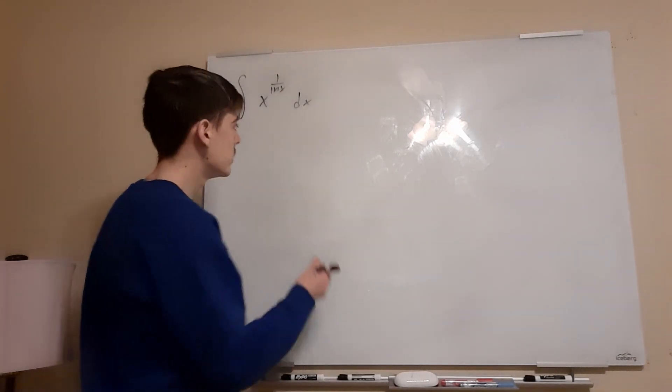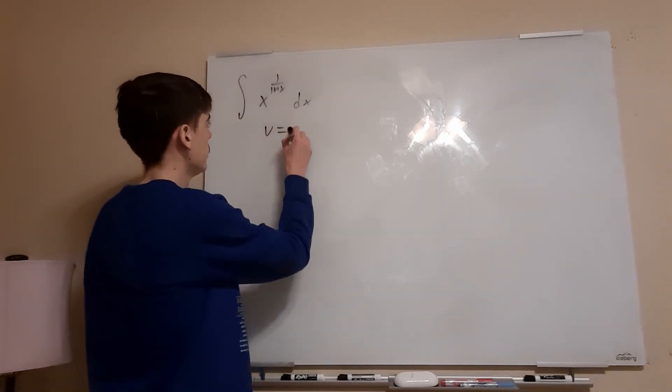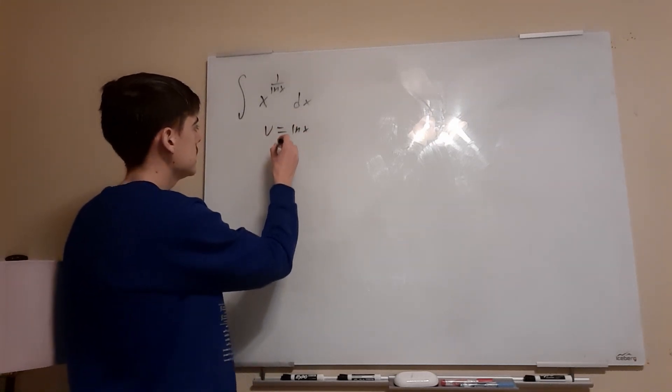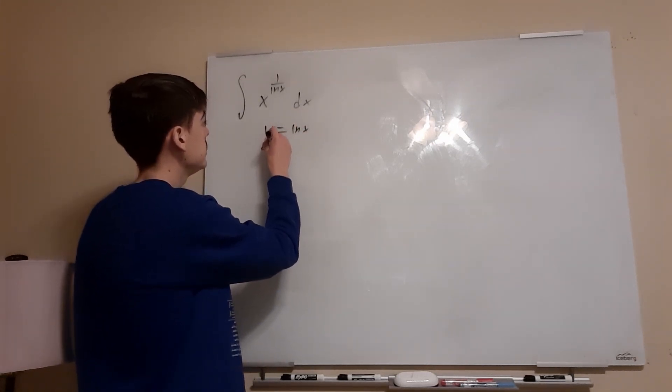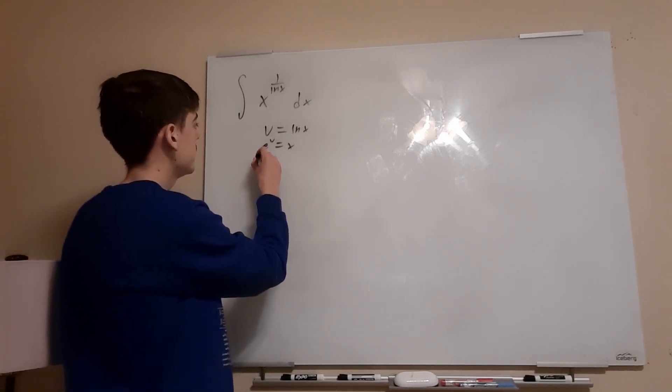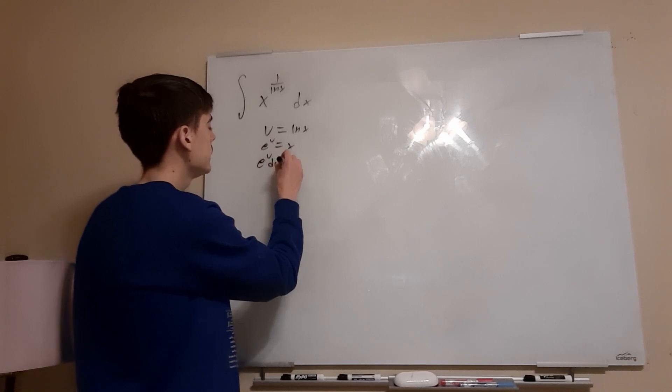Now the way I approach this one is I did a u sub where u equals ln x. We could solve for x in this case, where we'll find that e to the u equals x. And if we take the derivative, we'll find that e to the u du equals dx.